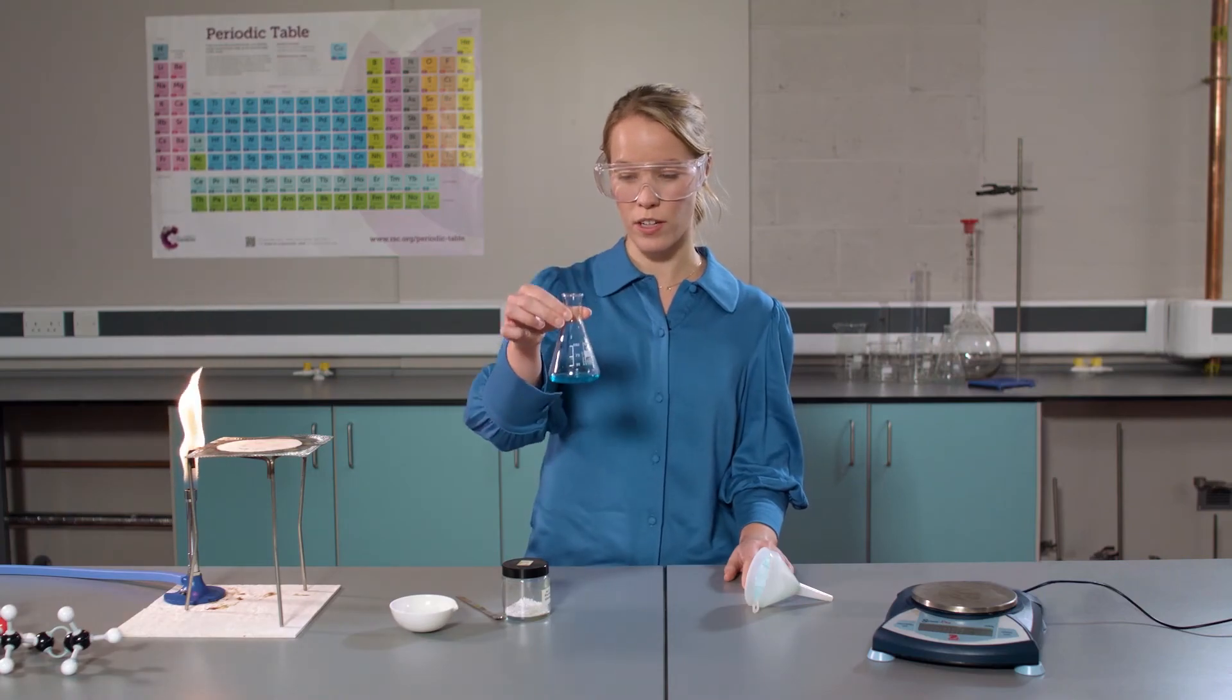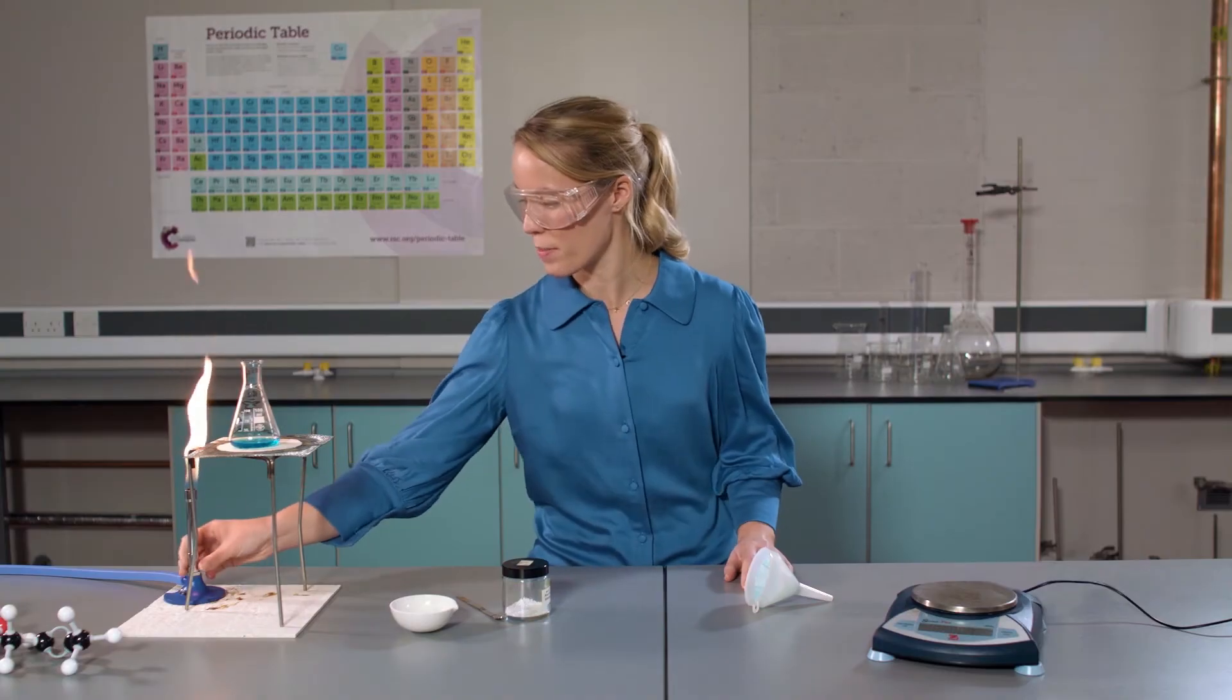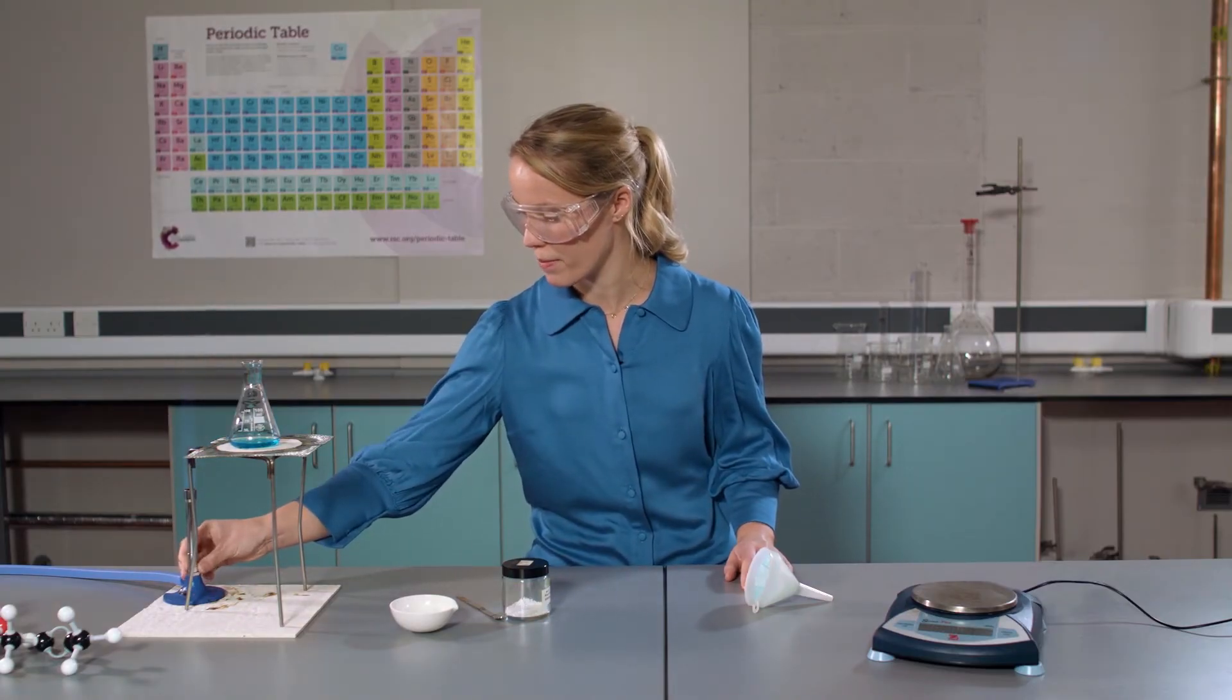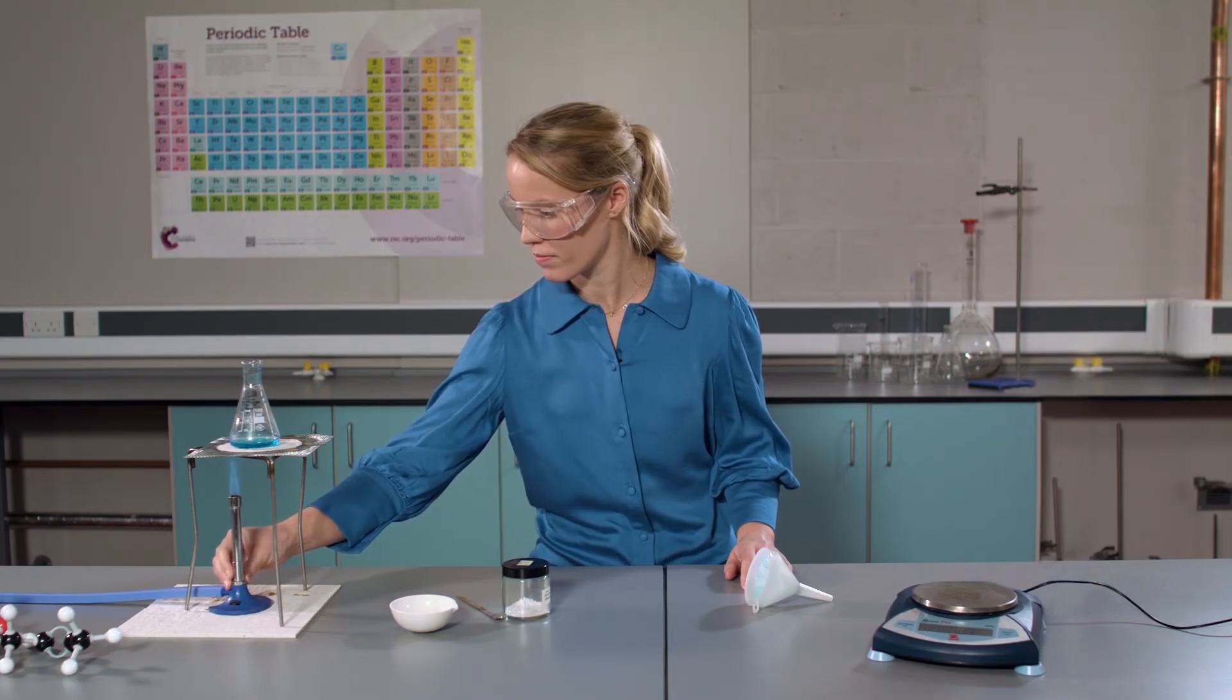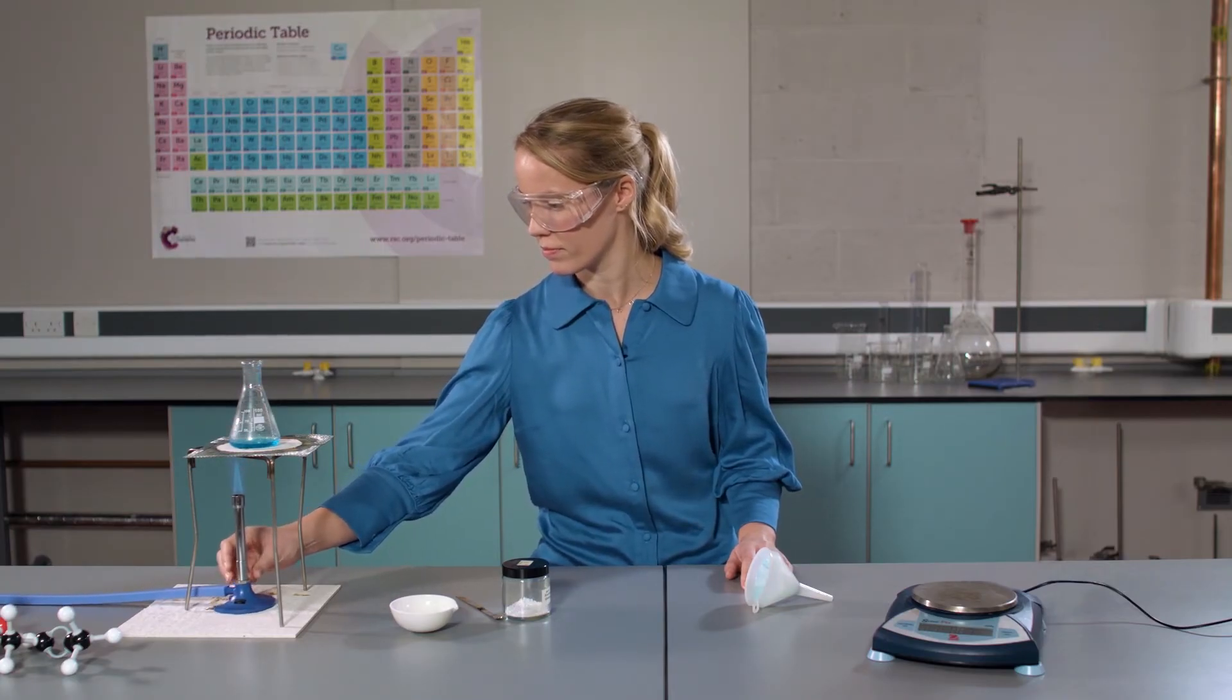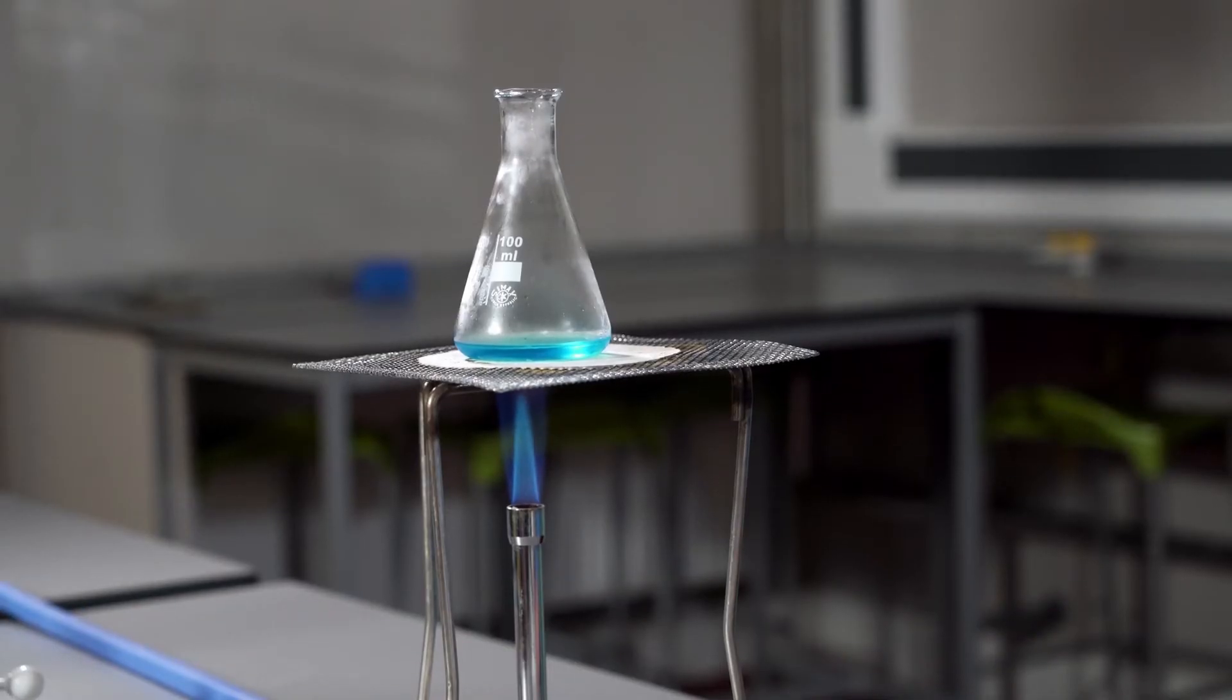Now I'm going to place my conical flask on my tripod and turn the Bunsen burner to the blue roaring flame. It's important that you let this gently simmer for two minutes only.